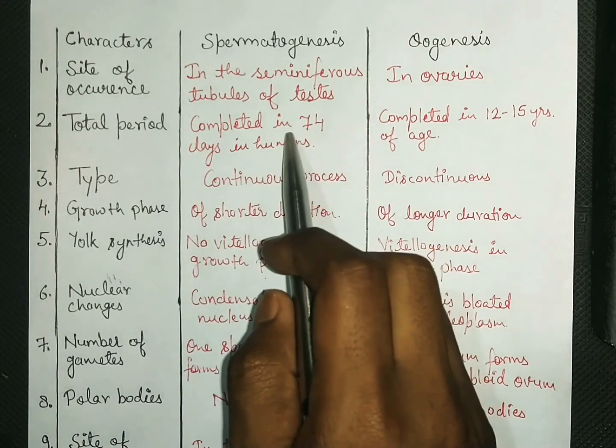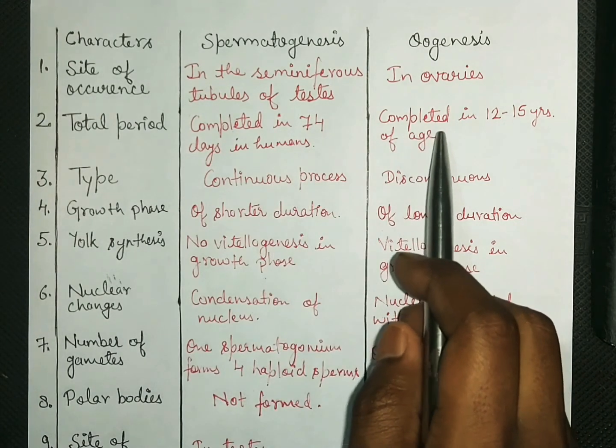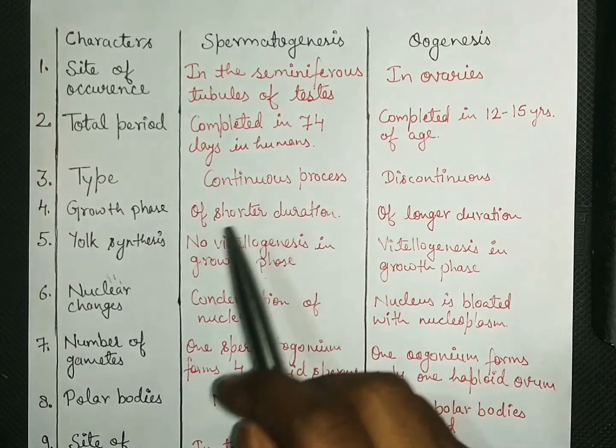Spermatogenesis takes 74 days for its completion and oogenesis completes in 12 to 15 years of age of a female.